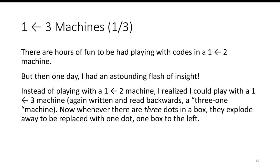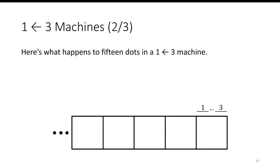Instead of playing with a 2-1 machine, what if I had a 3-1 machine, again written and read backwards as a 1←3 machine? Now whenever there are three dots in a box, they explode away to be replaced with one dot, one box to the left.